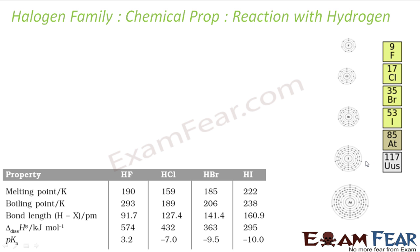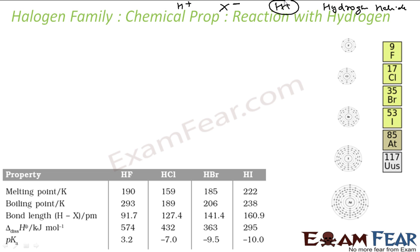Let's start with the reaction of halogens with hydrogen. All halogens react with hydrogen to form hydrogen halide. Hydrogen has a tendency to lose an electron to form H⁺, and all halogens have a tendency to gain an electron to form X⁻, because they get a stable electronic configuration, and thus they form hydrogen halide of the form HX.